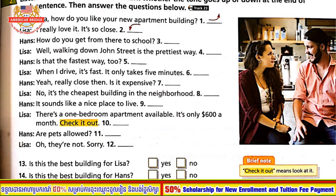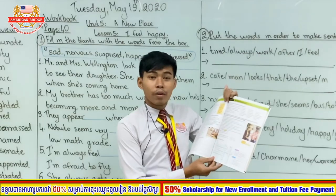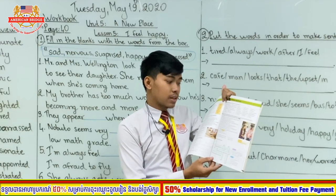Let's listen to track 23. Lisa, how do you like your new apartment building? I really love it, it's so close. How do you get from there to school? Well, walking down John Street is the prettiest way. Is that the fastest way too? When I drive it's fast — it only takes five minutes. Is it expensive? No, it's the cheapest building in the neighborhood. It sounds like a nice place to live. There's a one-bedroom apartment available, it's only $600 a month. Are pets allowed? Oh, they're not. Sorry.